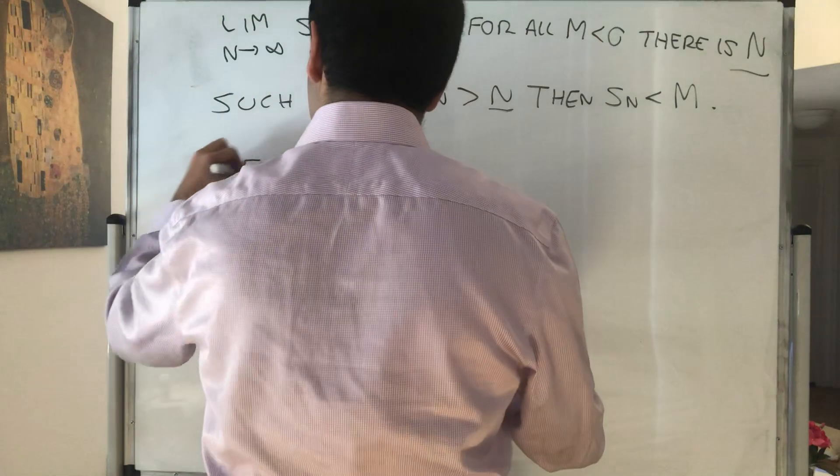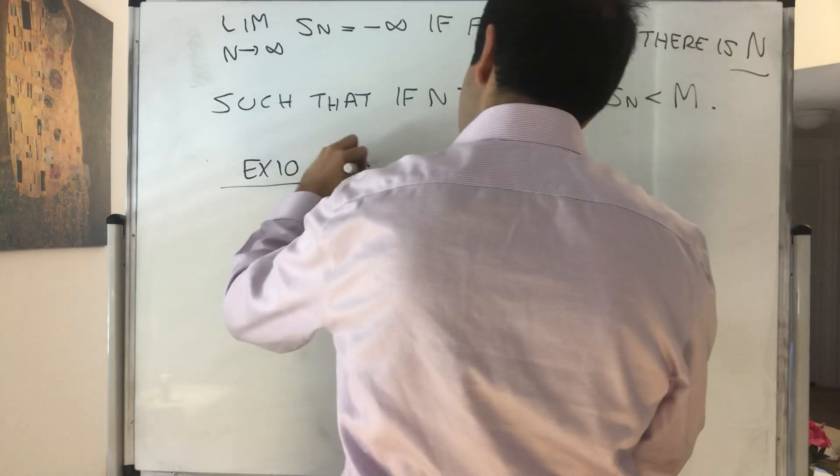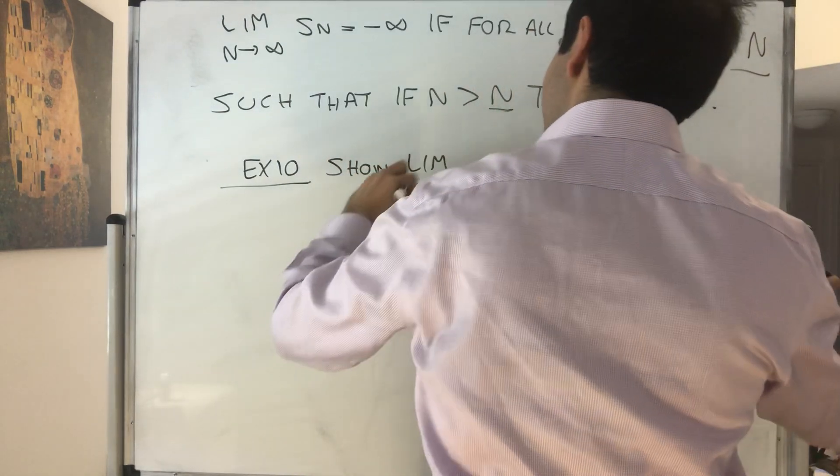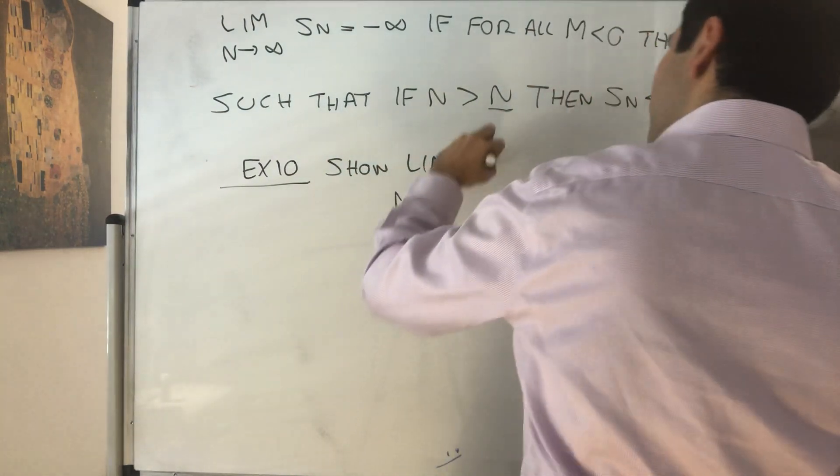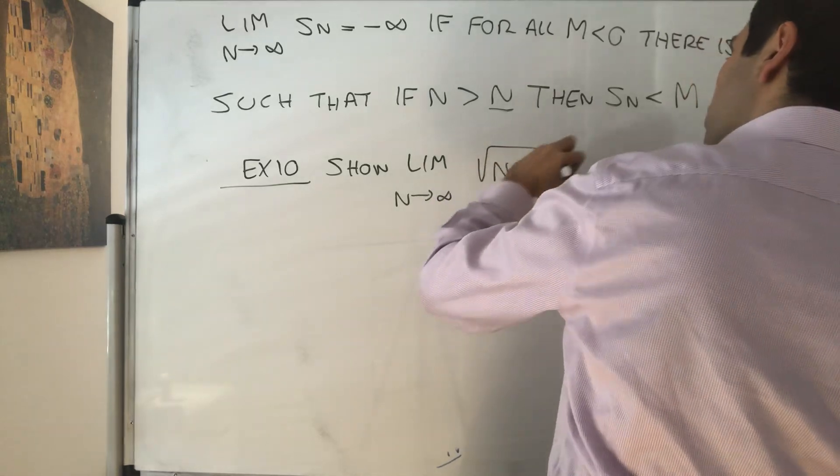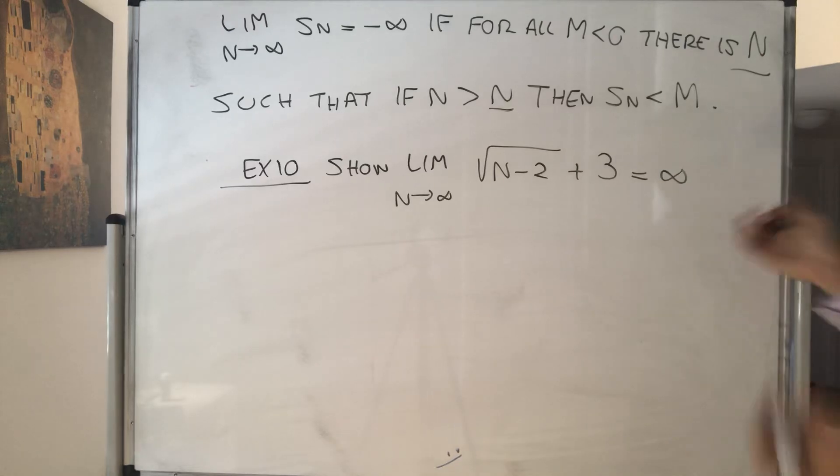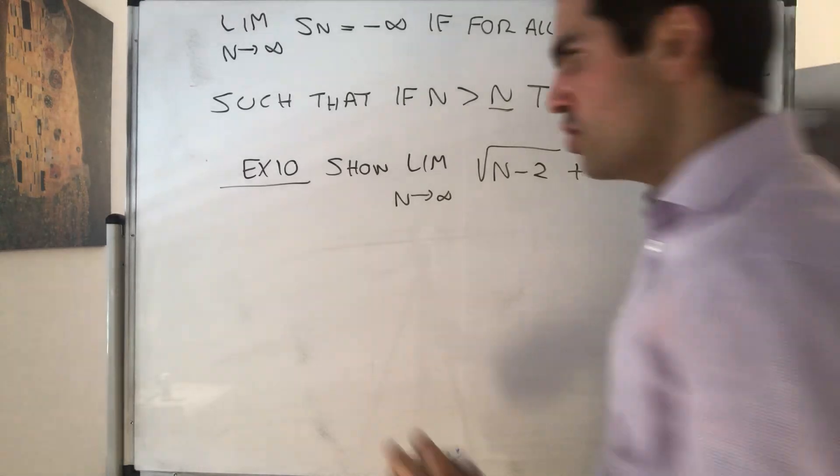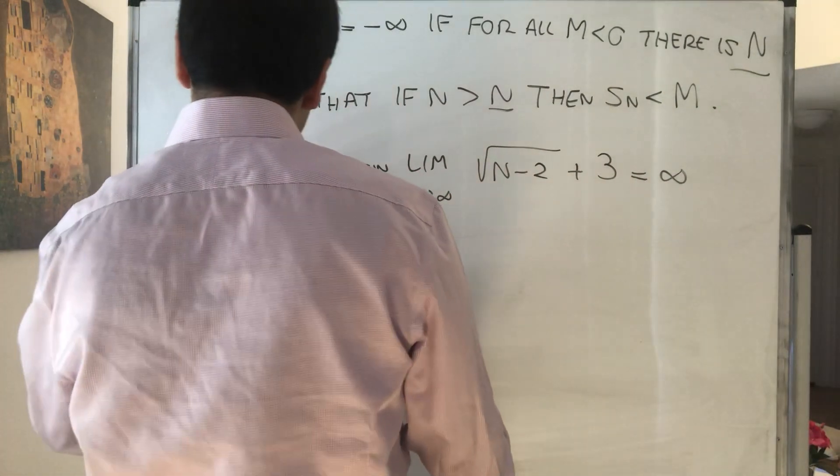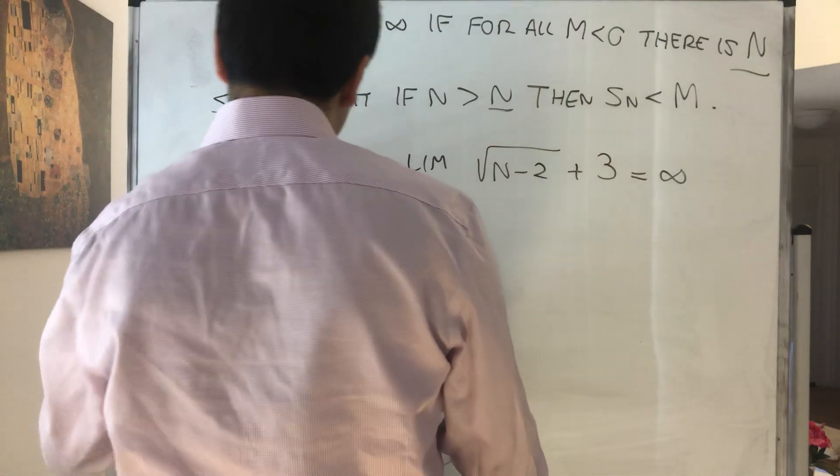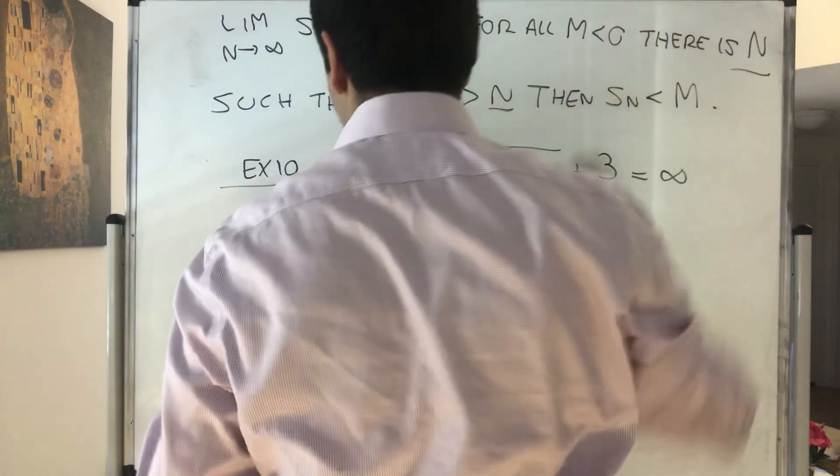So show that the limit as n goes to infinity of square root of n minus 2 plus 3 is infinite. And again, let's just do some scratch work. So step one, essentially want to find that threshold.